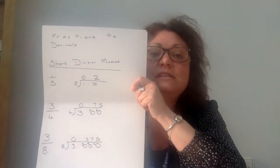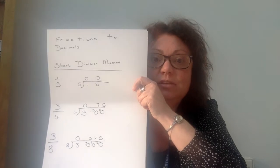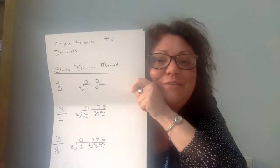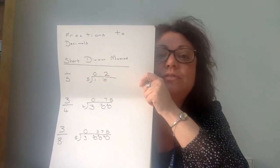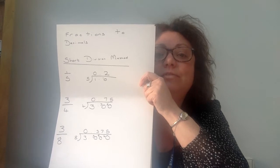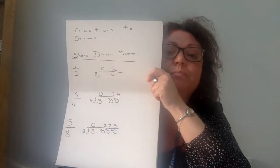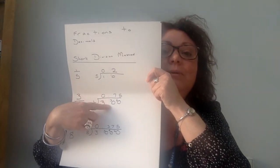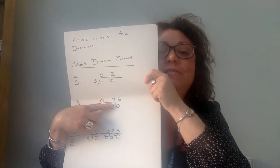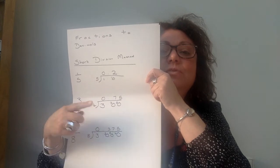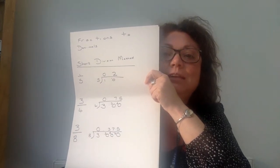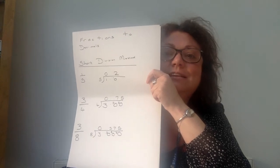So let's have a look at three quarters. We're going to divide the numerator by the denominator, so we're going to say 3.00 divided by four. We know that four doesn't go into three, so that's zero. We carry the three over, we raise that decimal through the roof, we carry that three over — fours into 30 go seven, remainder two, fours into 20 go five. 0.75, there is the decimal equivalent.